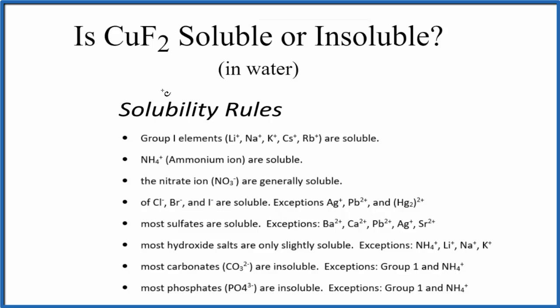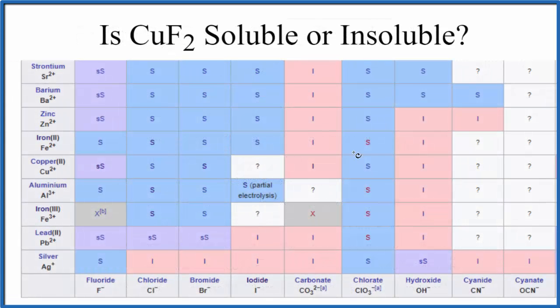What we can do is look at a solubility table. This is part of a larger solubility table. We go down right here, copper 2, Cu2+. And then over here, the negative ions, the anions, we have the fluoride ion, F-. So we go up, then we go over, SS. Slightly soluble.